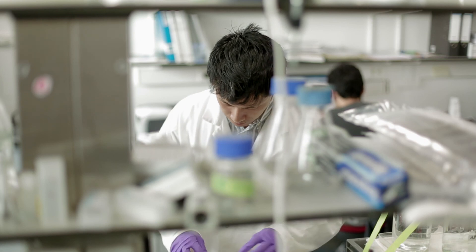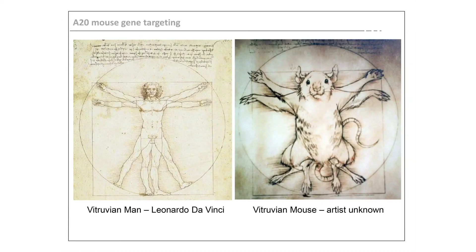Our research group is part of the Department of Molecular Biomedical Research of the Flemish Institute of Biotechnology and the University of Ghent. Together with the group of Rudi Bayert, we study the molecular mechanisms behind inflammatory processes and inflammatory pathologies, mainly focusing on the in vivo context using state-of-the-art gene technology in mice. We generate mutant mouse lines and characterize these mice in specific mouse models of inflammatory pathologies.